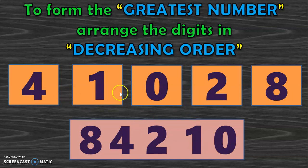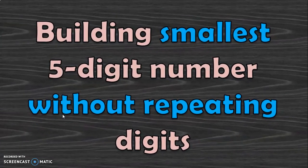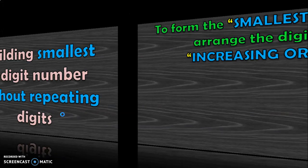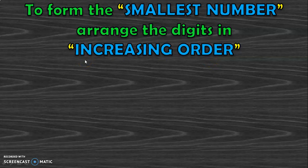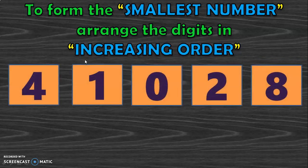Here, we have not repeated any of the digits — we have just used them once. Next, let us see how to build the smallest 5-digit number without repeating the digits. The rule is to arrange the digits in increasing order — ascending order, or from small to big. Let us use the same set of 5 digits: 4, 1, 0, 2, and 8.